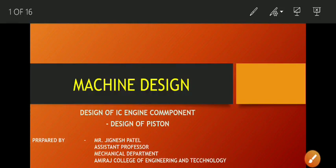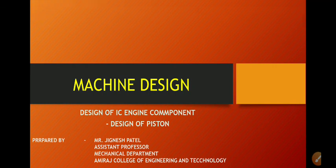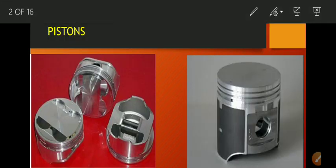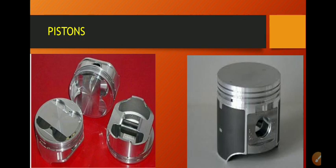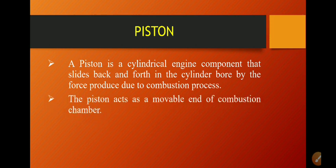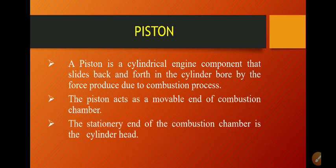Hello friends, today we are going to study about design of piston. In our last lecture we had studied about design of cylinder. The piston is the cylindrical part of the IC engine which moves back and forth in the cylindrical bore with the help of gas pressure produced due to the combustion of fuel. The piston is the movable part of the engine and the stationary part is the cylindrical head.